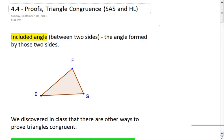Now before we go into these new ways to prove triangles congruent, you need to understand what an included angle is. An included angle means it's the angle between two sides. It's the angle formed by those sides. For example,